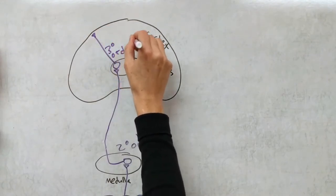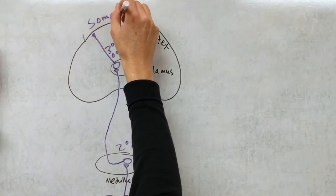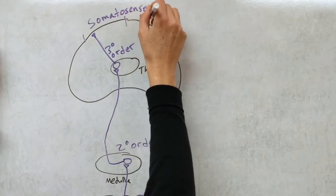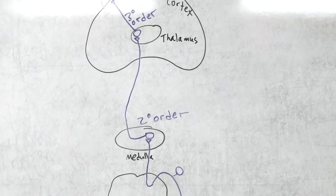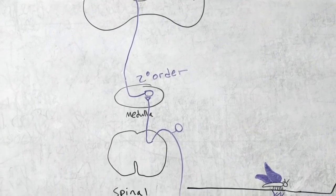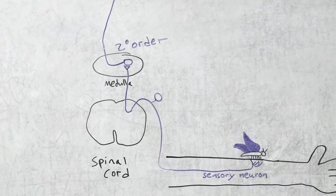In the thalamus, a third-order neuron is activated that sends its signal to the primary somatosensory cortex in the parietal lobe. Once the arm area of the somatosensory cortex is activated, you will perceive the touch and turn your attention to the lovely butterfly on your arm. All of this happens in that split second between when the butterfly lands and you sense the touch.